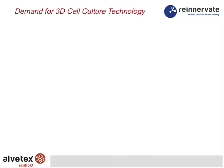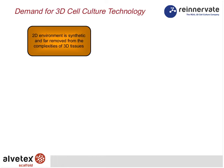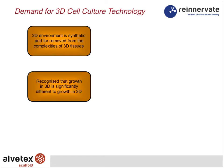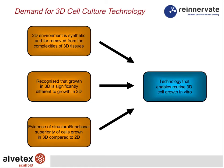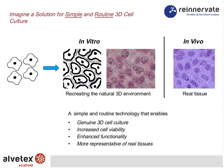There is a demand, therefore, for growing cells in cell culture in three dimensions. The 2D environment is synthetic and far removed from in vivo, as described. It is recognised in the literature that growth in 3D is different to 2D, and there is now evidence of structural and functional superiority of cells growing in 3D compared to 2D. All of this builds demand for technologies that enable you to grow cells routinely in 3D in the cell culture lab.